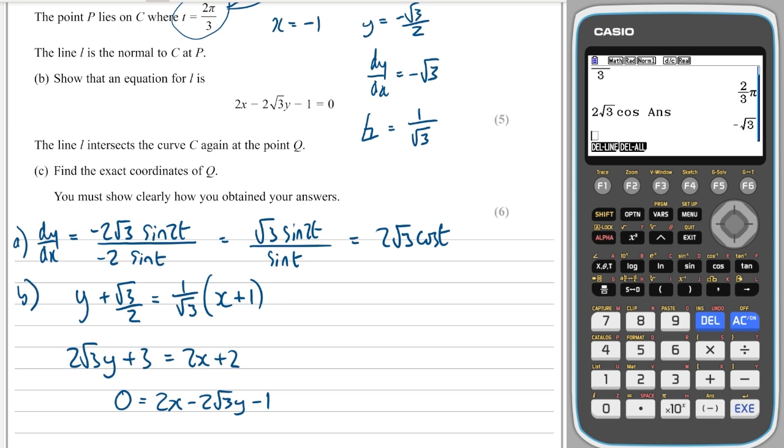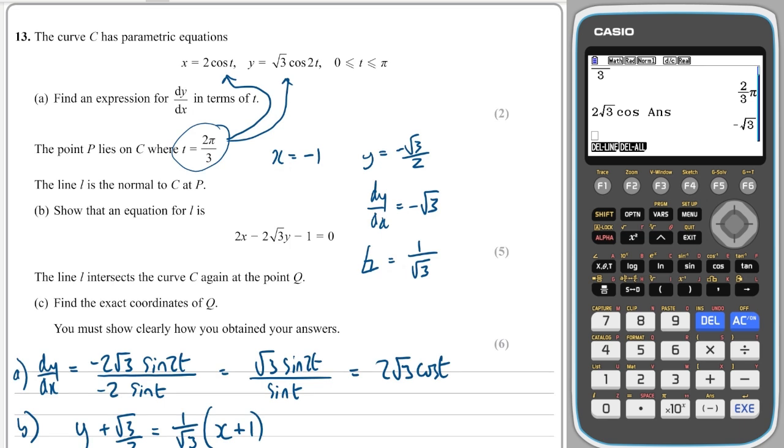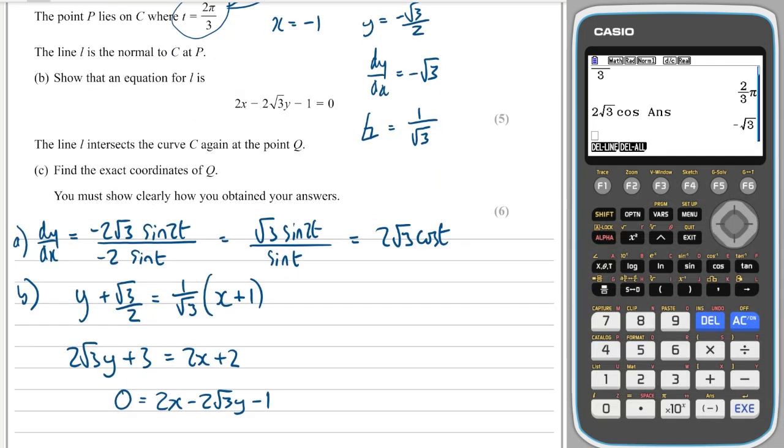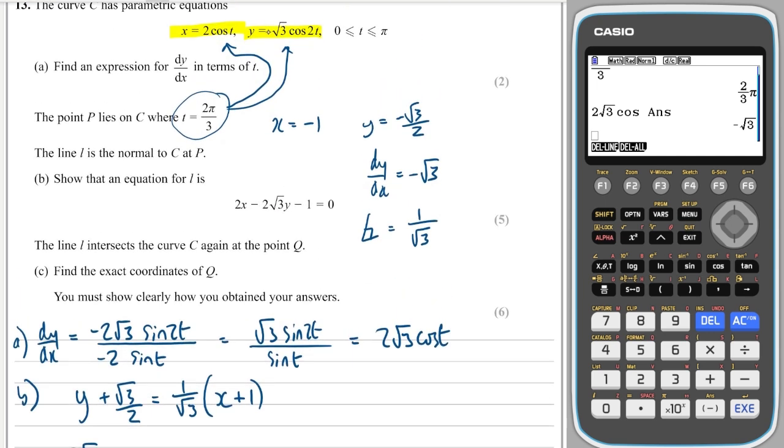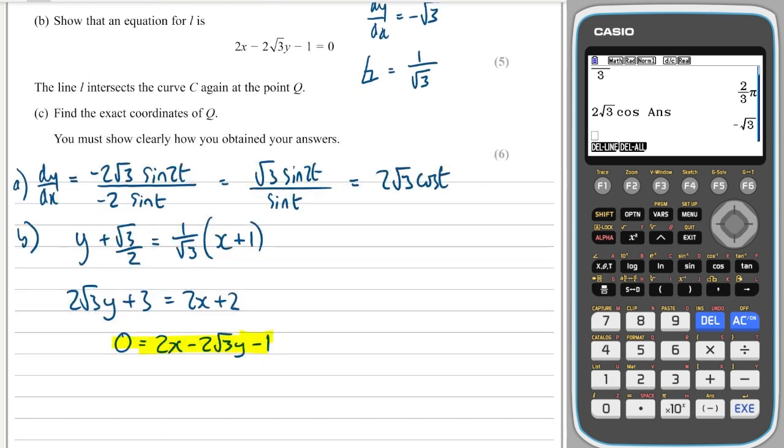The line l intersects the curve c again at the point Q. Find the exact coordinates of Q. So it intersects the curve again. What I'm going to do is a simultaneous equation with the curve and the line, and the best way of me doing that is by subbing these two into here.